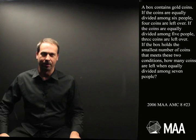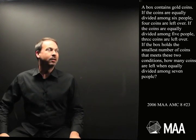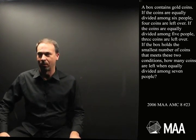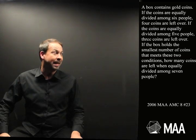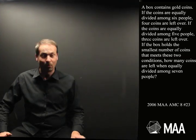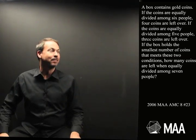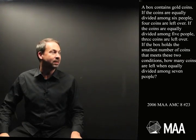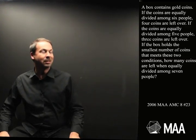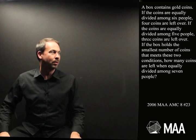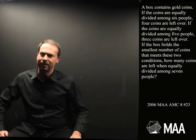A box contains gold coins. If the coins are equally divided among six people, four coins are left over. If the coins are equally divided among five people, three coins are left over. If the box holds the smallest number of coins that meets these two conditions, how many coins are left when equally divided among seven people?